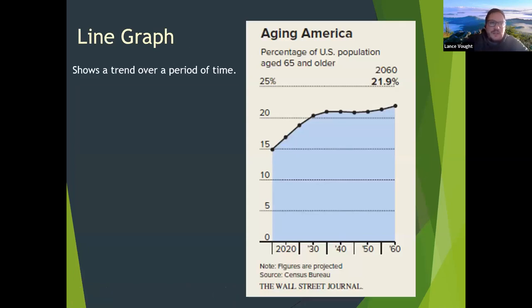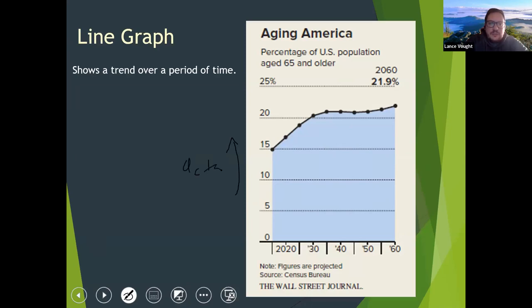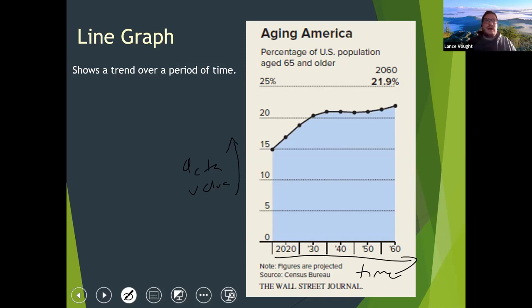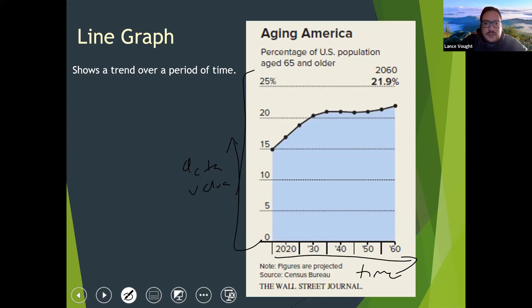A line graph allows you to see trends over a period of time. The vertical axis shows your data value, and the horizontal axis shows time — years, months, or times of day. So if you're measuring weather forecasts, it's hourly; unemployment statistics might be monthly; GDP could be annually. This example is by every five years, showing what proportion of America's population is over 65, with the data value on the vertical axis and time on the horizontal axis.